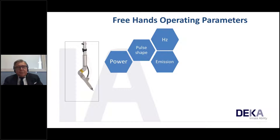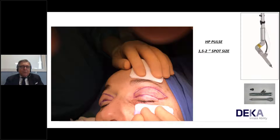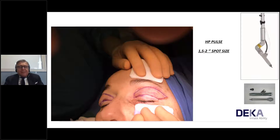Freehand operating parameters for the 1.5-inch piece: pay attention to power, pulse shape, frequency, and emission. Using HP pulse in freehand mode with the 1.5-inch spot size, we can appreciate the sharp demarcation of the cutting incision area. This allows operation in a clean surgical theater with minimal or no bleeding.